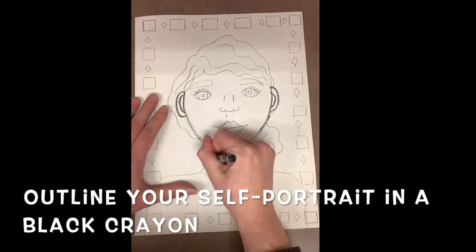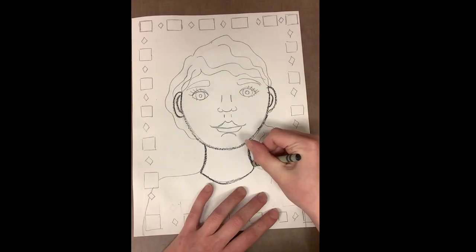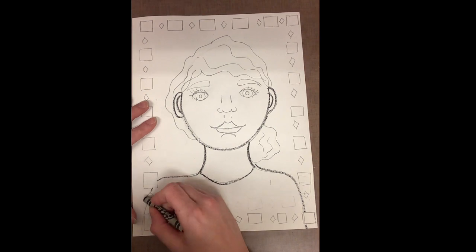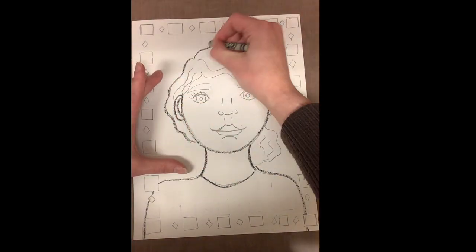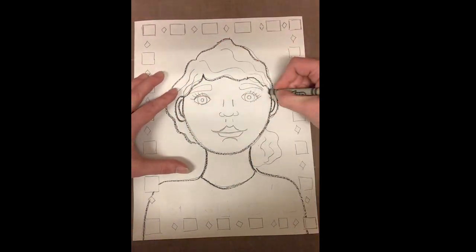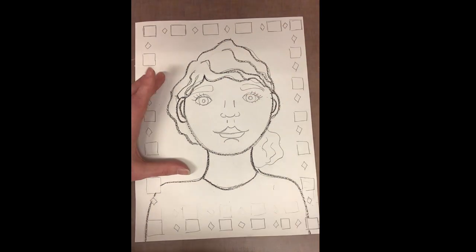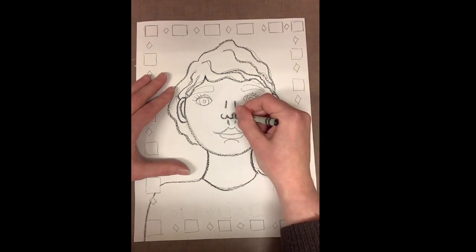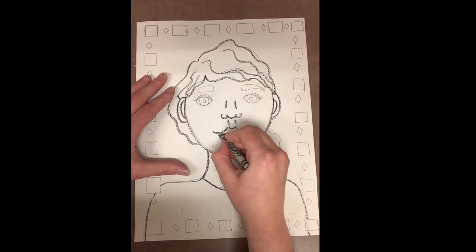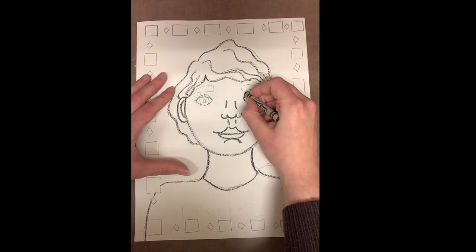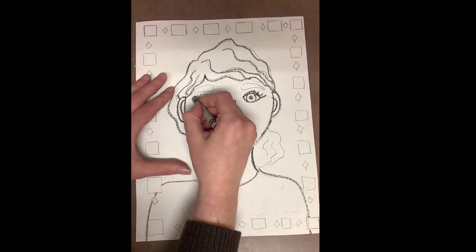Next you can outline your whole self-portrait in a black crayon. I'm not outlining my border or anything else. I'm just outlining my self-portrait because that's the part I really want to stand out. When you outline something, you're just redrawing everything again, but this time with a black crayon. That way everything really stands out from the page.